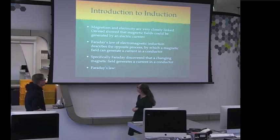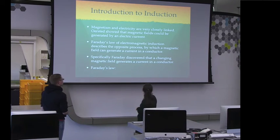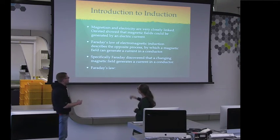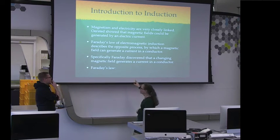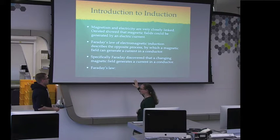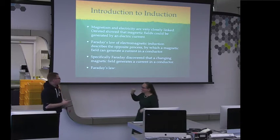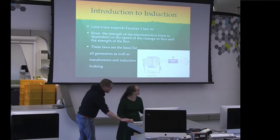Specifically, Faraday discovered that a changing magnetic field generates a current in a conductor. Faraday's law... but do we not need a formula there? Yeah, I think there was a formula there before. There's something about like delta phi on delta T or something. Yeah, some change with respect to time, but maybe we just go on and can do that. Let's go on.